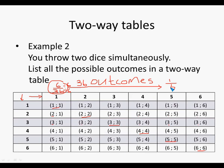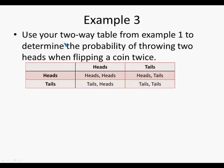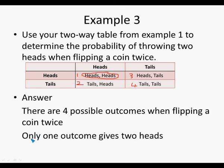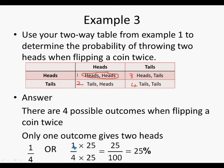Use your two-way table from example one to determine the probability of throwing two heads when flipping a coin twice. There are four possible outcomes when flipping a coin twice. Only one outcome gives two heads, which is heads-heads. Hence there is a one out of four chance to get two heads when flipping a coin twice. We can also multiply the top and bottom by 25.